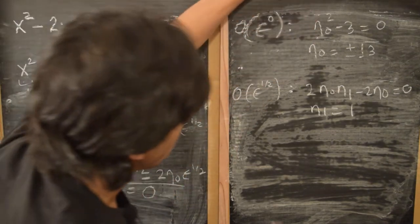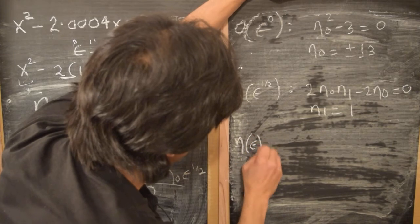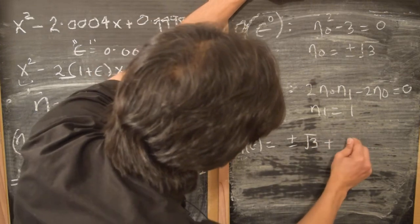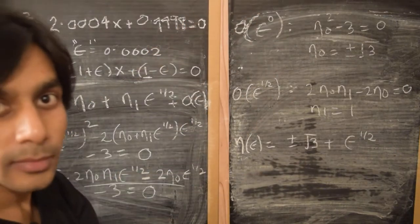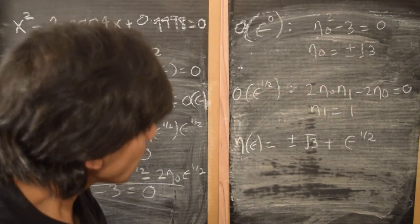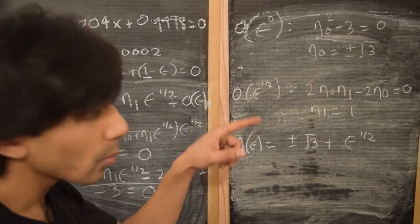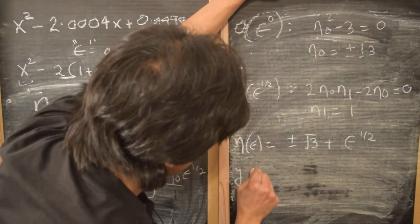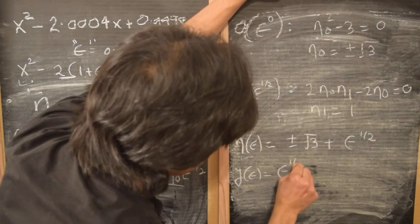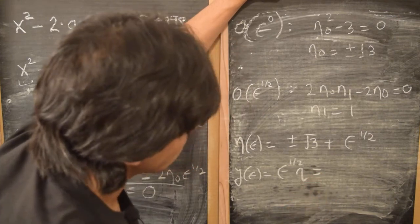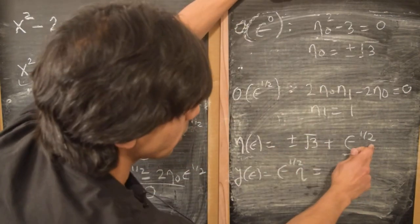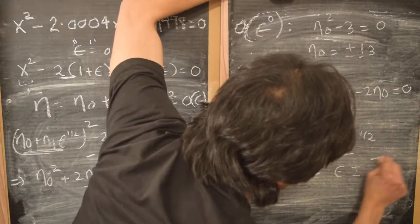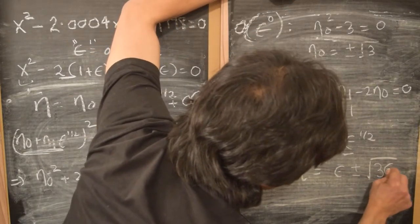Now, recalling that we defined η = y/√ε, the variable y is ε^(1/2) times η, which gives us y = ε^(1/2)·(±√3 + ε^(1/2)) = ±√3·√ε + ε. Multiplying through by ε^(1/2), we find y = ε ± √3·√ε, which we can write collectively.